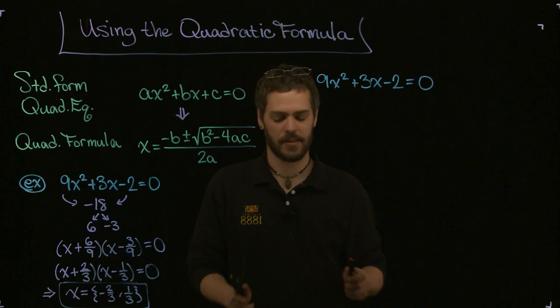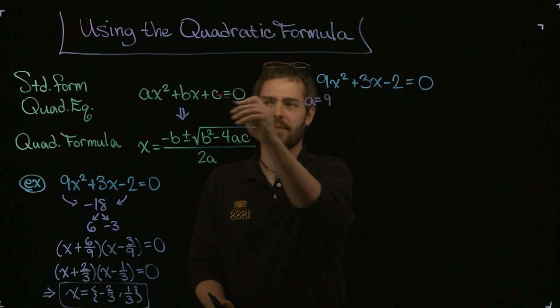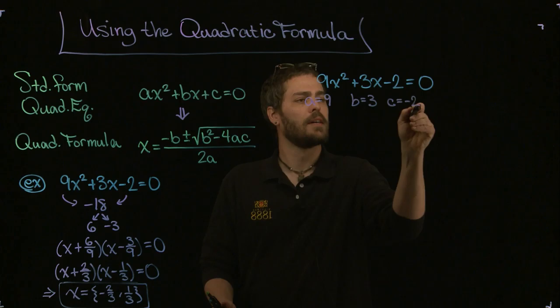Right now I'm going to say a is equal to 9, just matching it up. B is equal to 3 and c is equal to negative 2, to this guy right there. Make sure you include the signs.